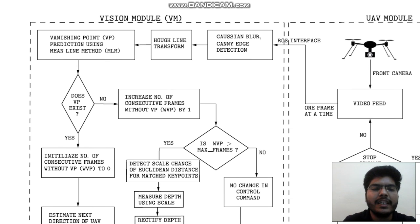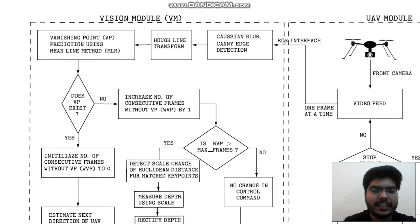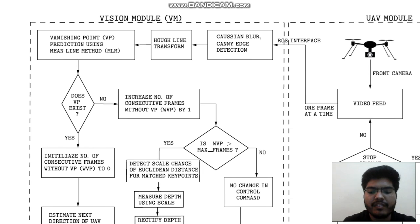The edges of interest are the intersection lines of the ceiling and the side walls of the corridor where the UAV is navigating. Once the vanishing point is estimated, pitch and roll coordinates are sent to the UAV from the PID controller on the UAV itself. If the vanishing point is not found, the upcoming frames are processed and the entire process repeats.